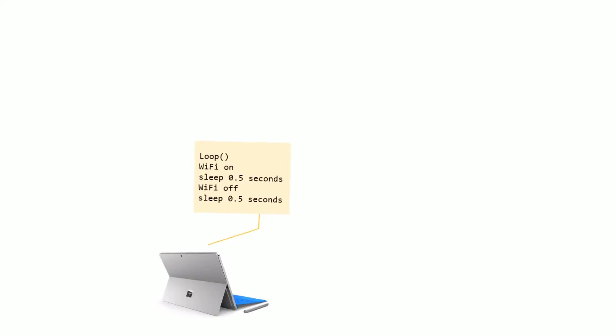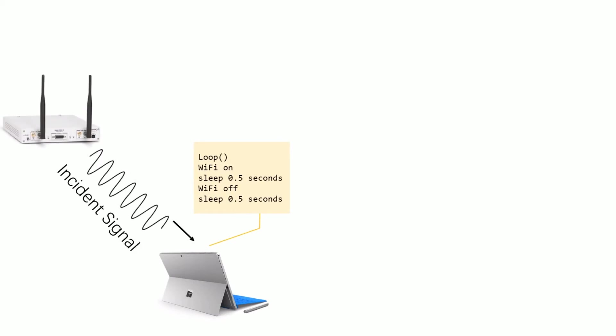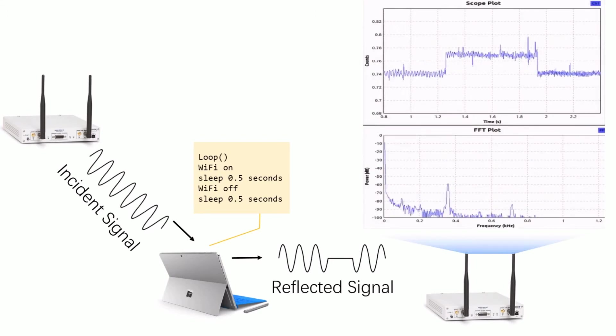Thus, when a Wi-Fi NIC is switched between the on and off state, the incident RF signal can be reflected with different intensities, just like a simple backscatter tag.